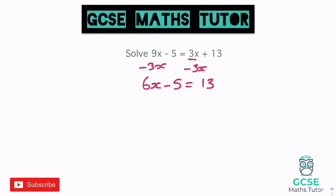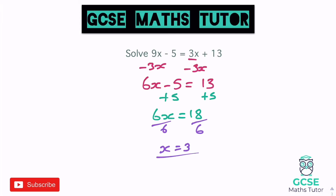Again then, moving the numbers to the other side — it's a minus 5, so we're going to have to add 5, and we get 6x equals 18. This is quite a nice one here, because 6 does go into 18, so when we divide by 6, we get x equals 3.